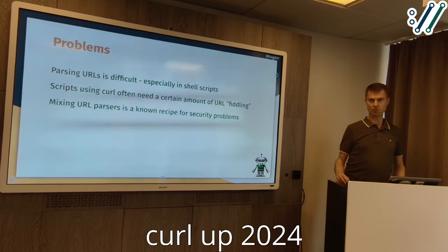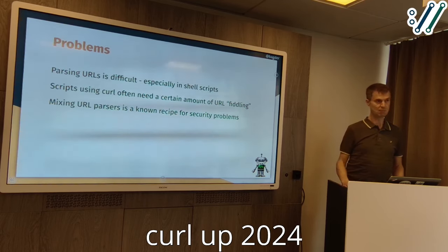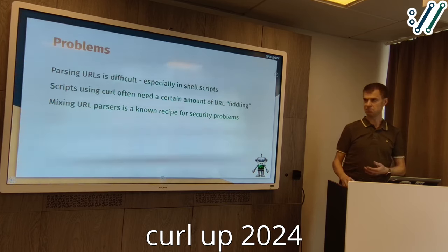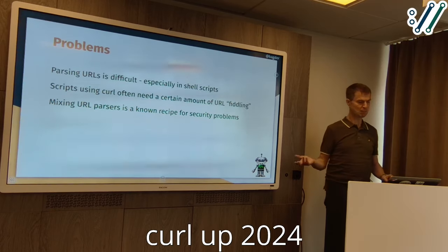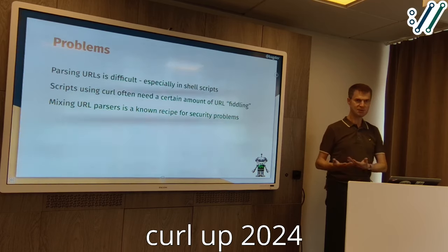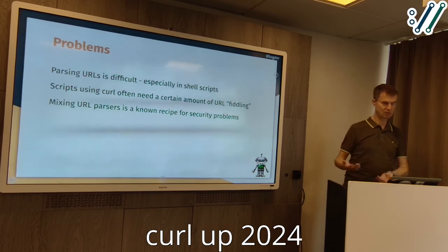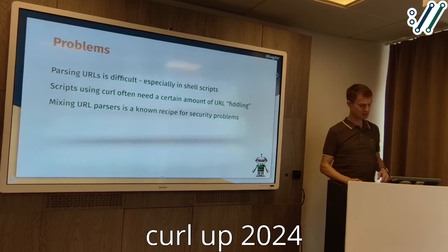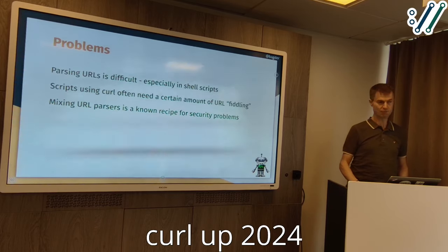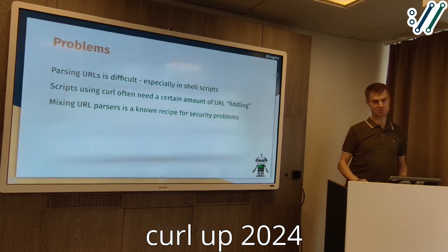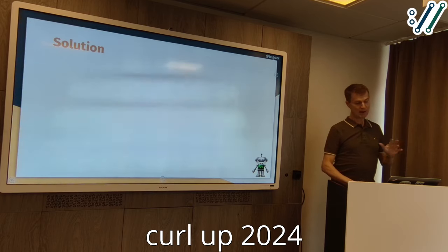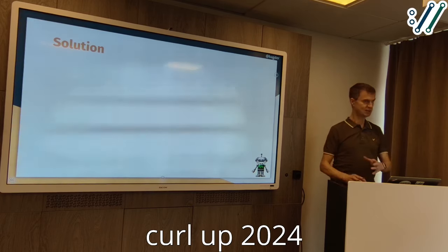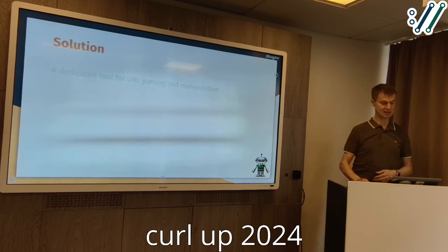A lot of scripts do a lot of curl fiddling and it's hard to parse, extract, set, and change URLs in shell scripts. Not least because mixing URL parsers is a common security problem. I talked to the guys who published a paper about this — they found numerous new security problems from different applications using different URL parsers in weird combinations. Some will interpret something one way and others differently, because URLs are messy and there's really no URL standard that we all follow.